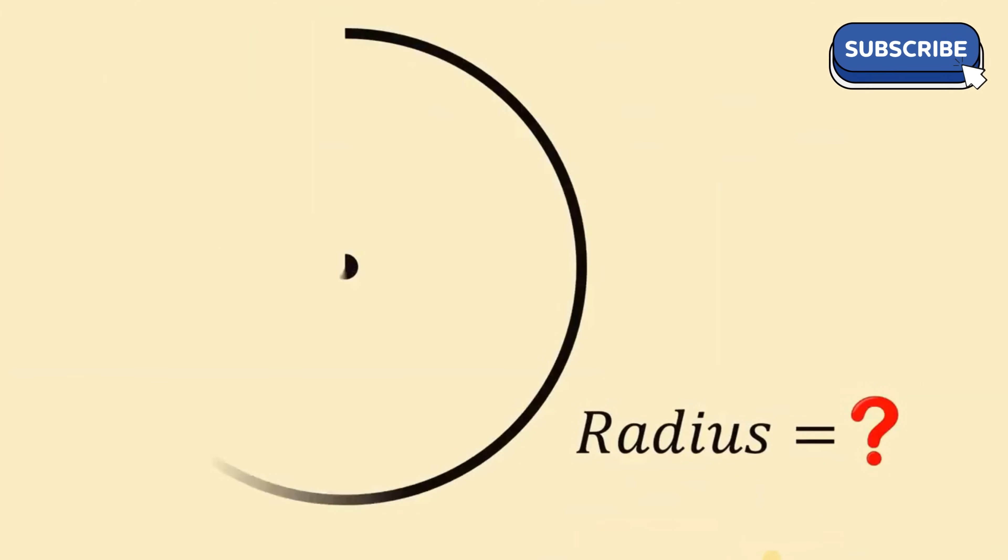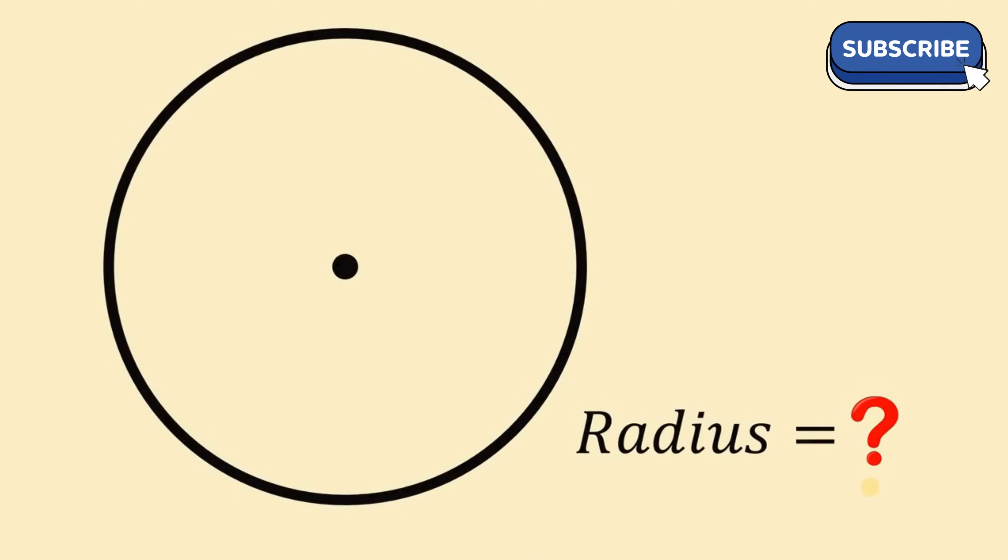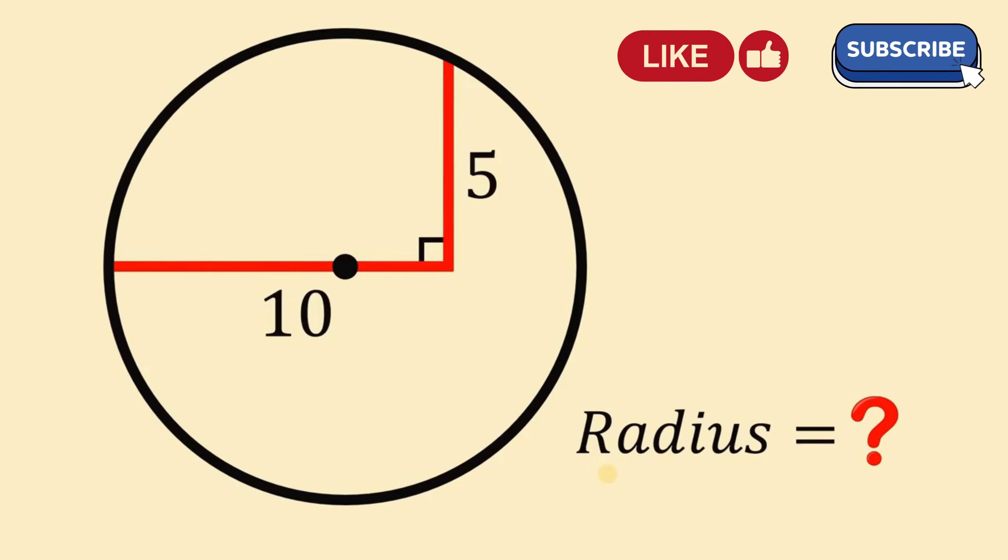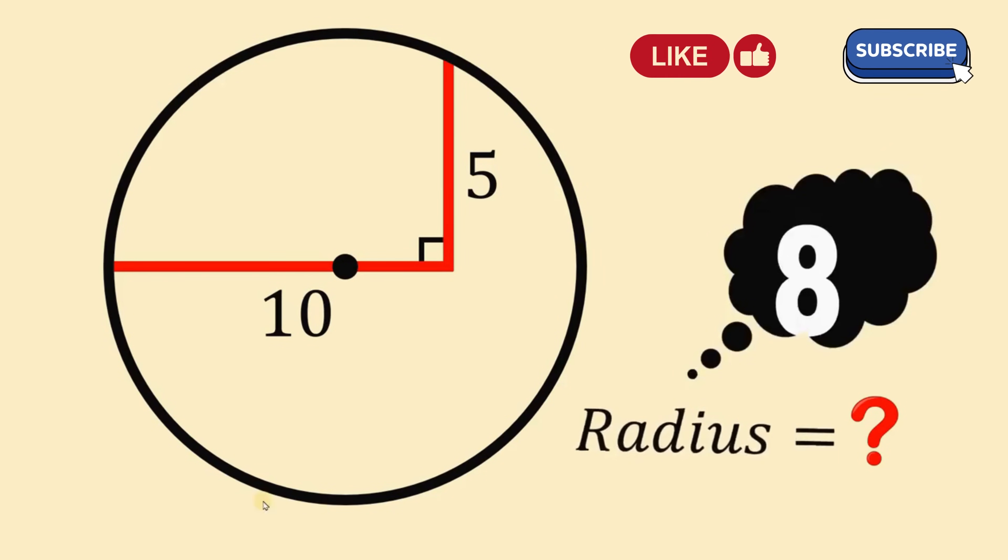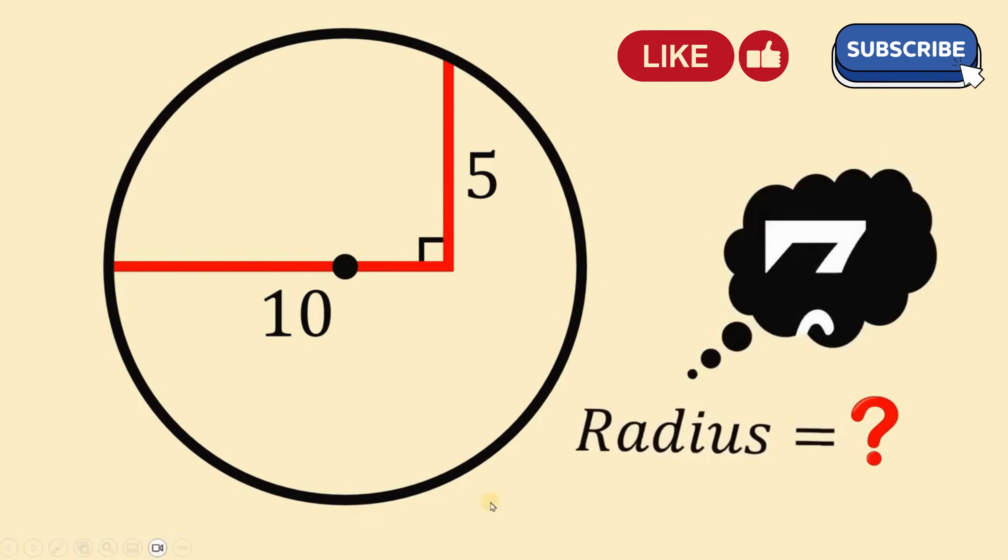So given a circle and two perpendicular segments that measure 10 units and 5 units, then our goal is to solve for the radius of this circle. Now you can pause this video if you want to give this problem a try.